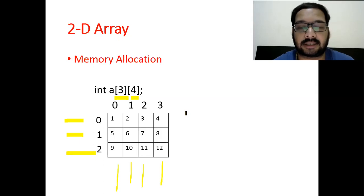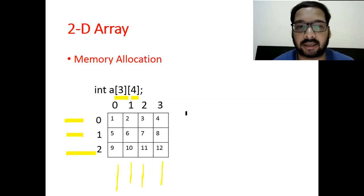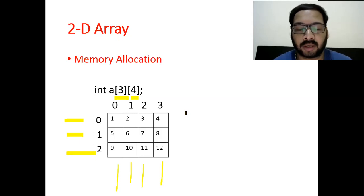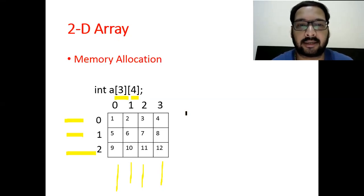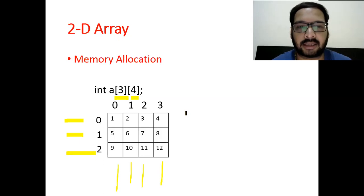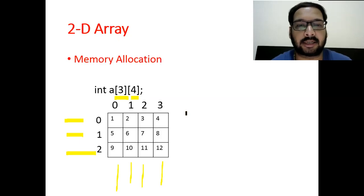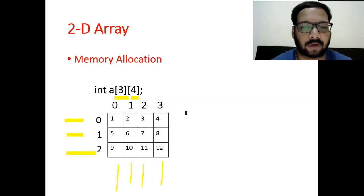In 1D array I told you about the index. In 1D array there was one row, so the index was 0, 1, 2, 3, 4. Those who have not seen the 1D array videos should watch them first, because if you don't understand 1D array, 2D array will be a problem. You can find the playlist link in the video description. The whole C-language playlist including 1D array programs is available there.